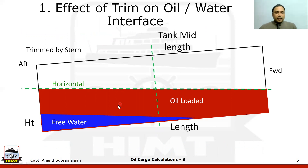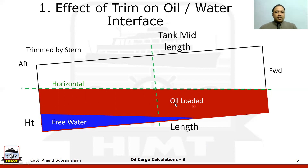In this particular example, we have oil loaded in the tank. The tank is trimmed by stern, so the aft sounding is more than the forward sounding. But we also have some free water. Because of the free water, the total quantity of oil loaded cannot be directly figured out by taking the mid-length ullage and mid-length depth of the tank. That is the reason why we have to do this process two times over.